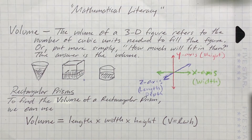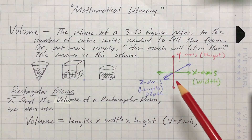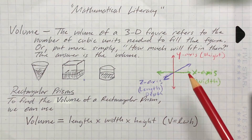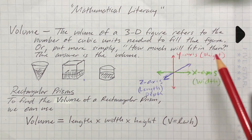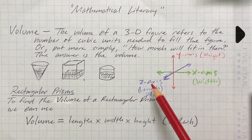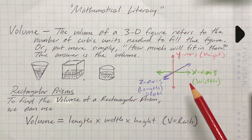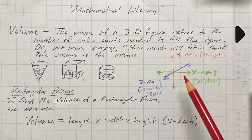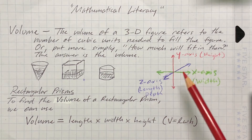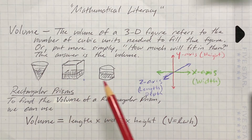This lesson is about finding the volumes of rectangular prisms. We have the x-axis, which is the width (side to side); the y-axis, which is the height (how tall); and the z-axis, which is the depth, also called the length (how long). So x, y, z for three-dimensional figures. We're going to use these dimensions as measurements to find the volume inside these three-dimensional objects.